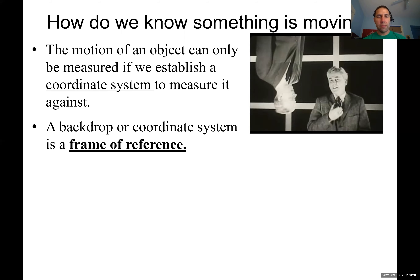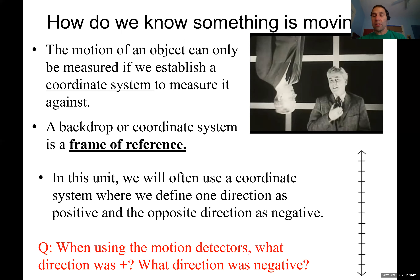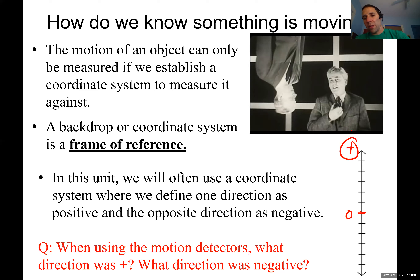In this unit, we'll often use a coordinate system where we define one direction of motion as positive and the opposite direction as negative — almost like a number line. With motion detectors, moving away from the zero point was considered positive, and moving toward the detector was considered negative.